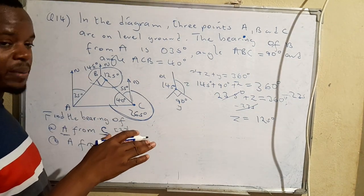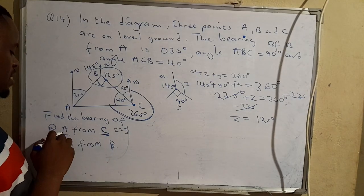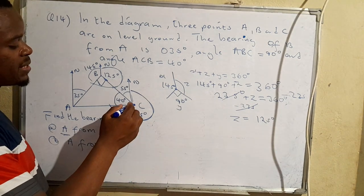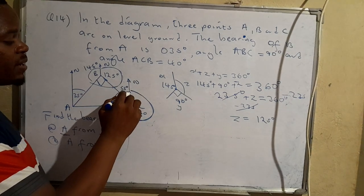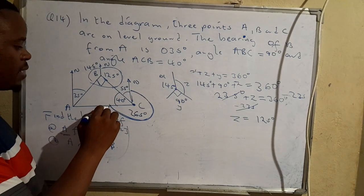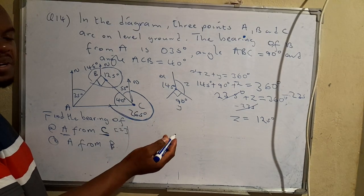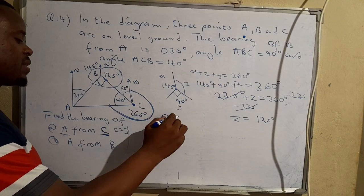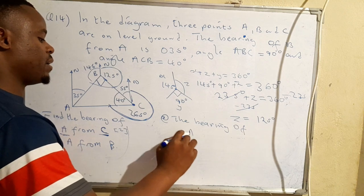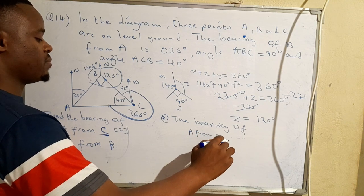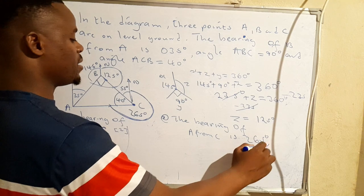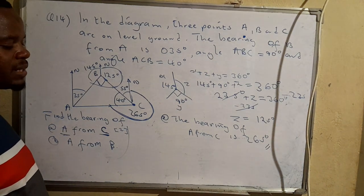Now that we've determined the missing angles, we can work out the bearings. For the bearing of A from C, the word 'from' is very important. You go to C, draw the north, then measure the angle in the clockwise direction from north to A. The bearing of A from C is 265°.